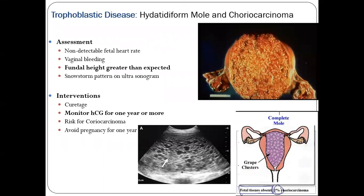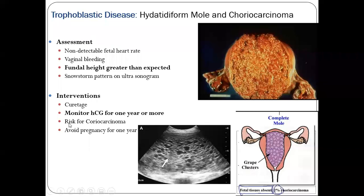Here, talking about trophoblastic disease — also called gestational trophoblastic disease. It is a term used for a group of pregnancy-related tumors. These tumors are very concerning and they appear when cells in the uterus start to proliferate. The most common trophoblastic diseases are hydatidiform mole and choriocarcinoma.